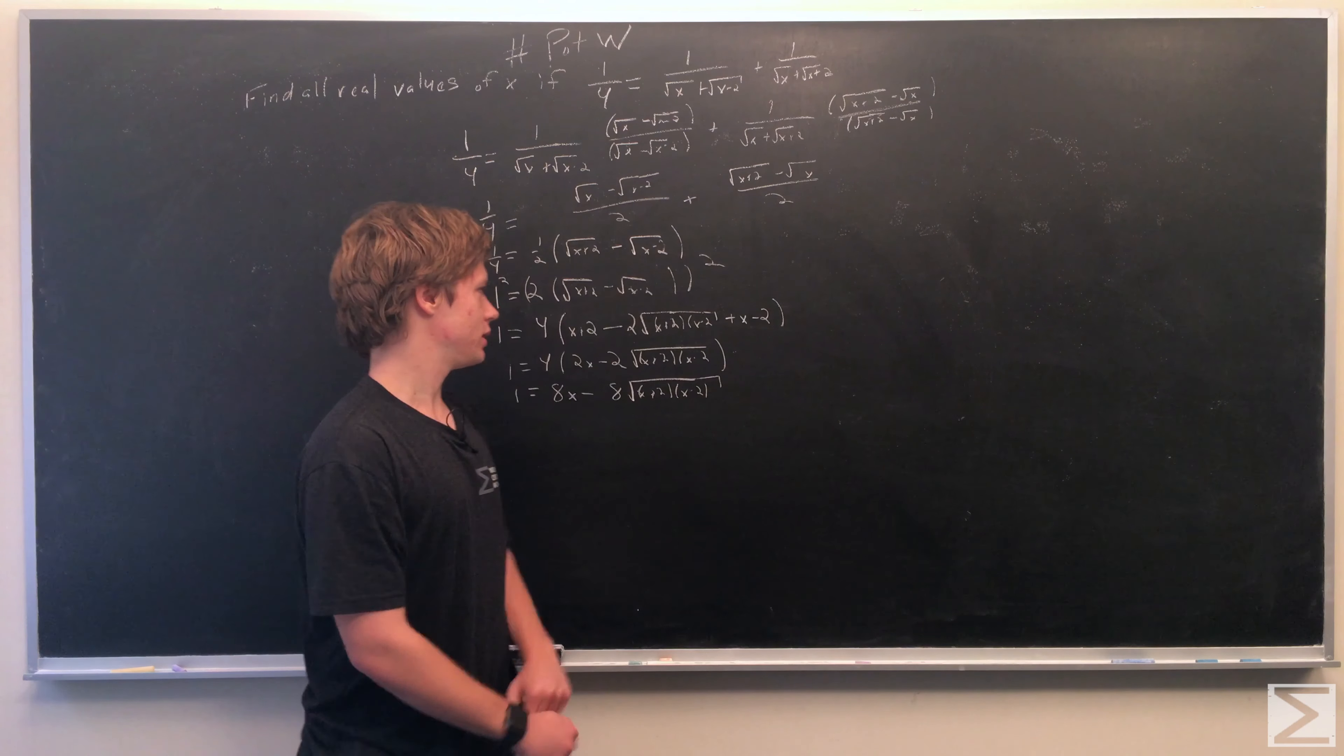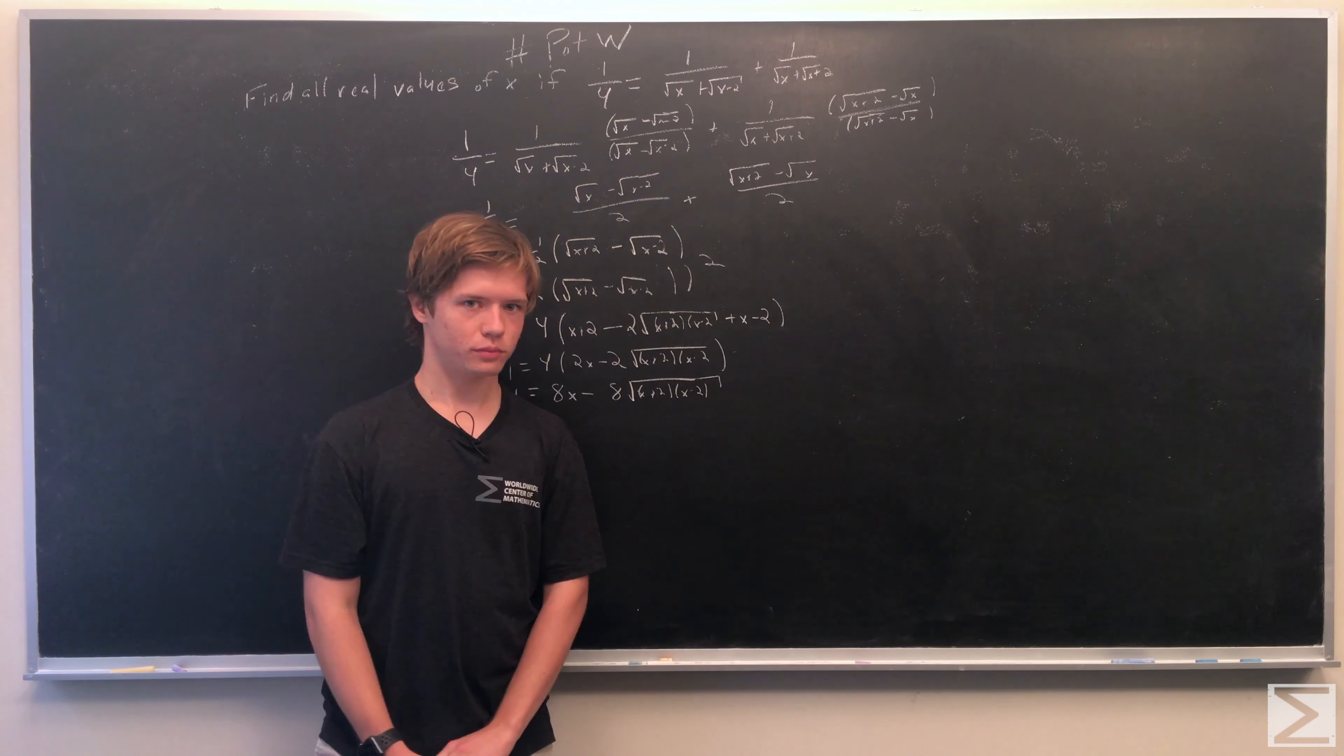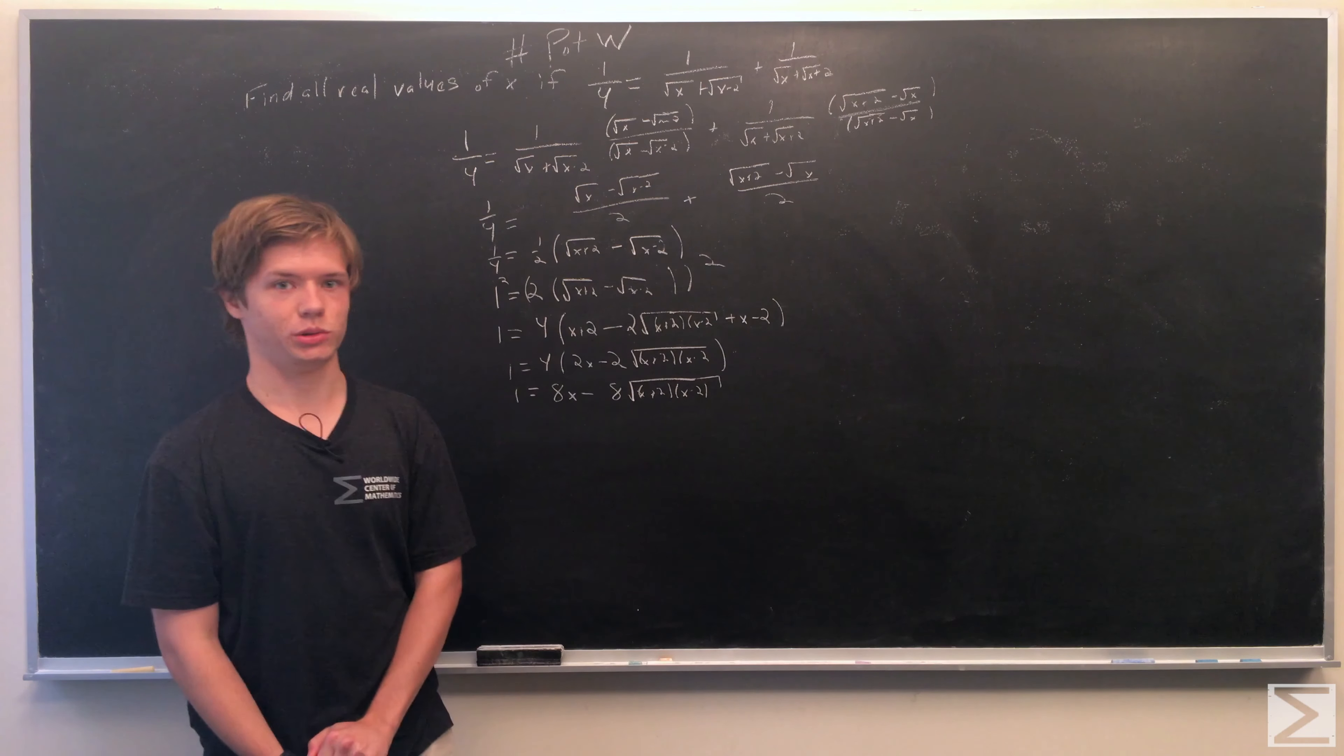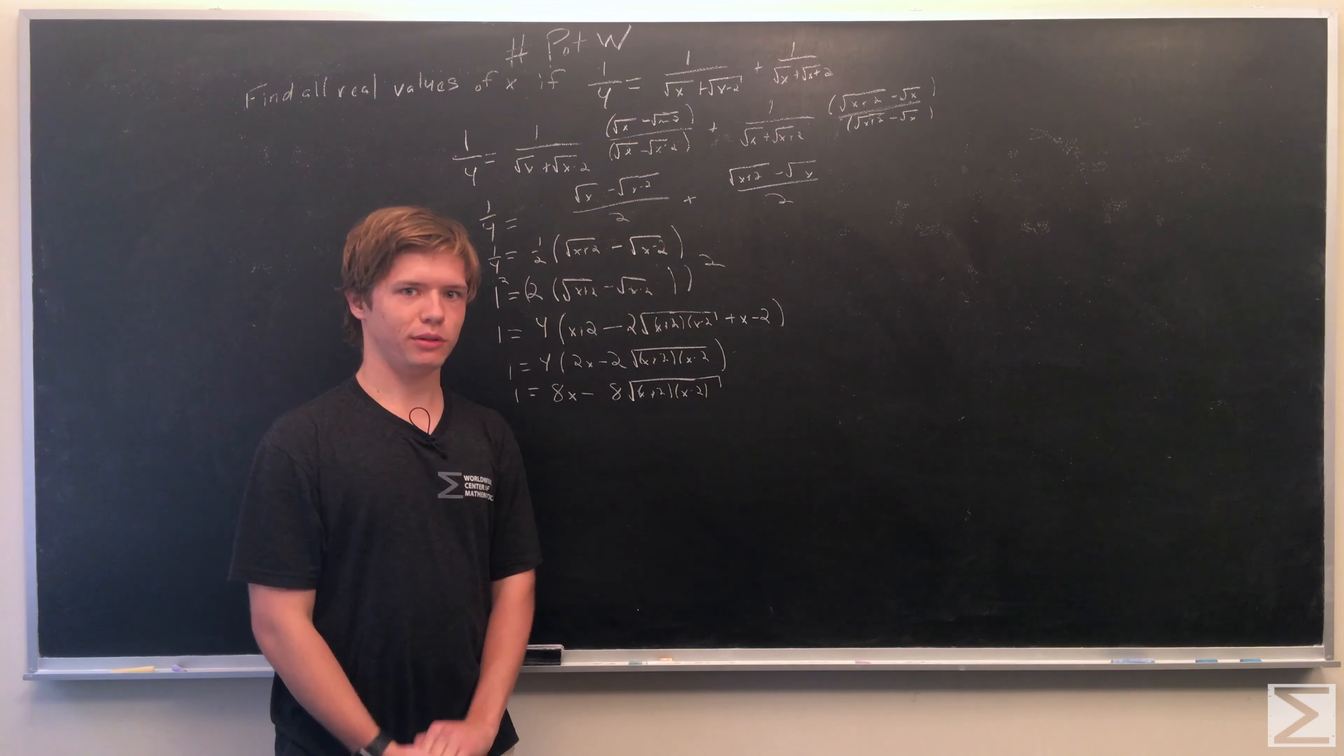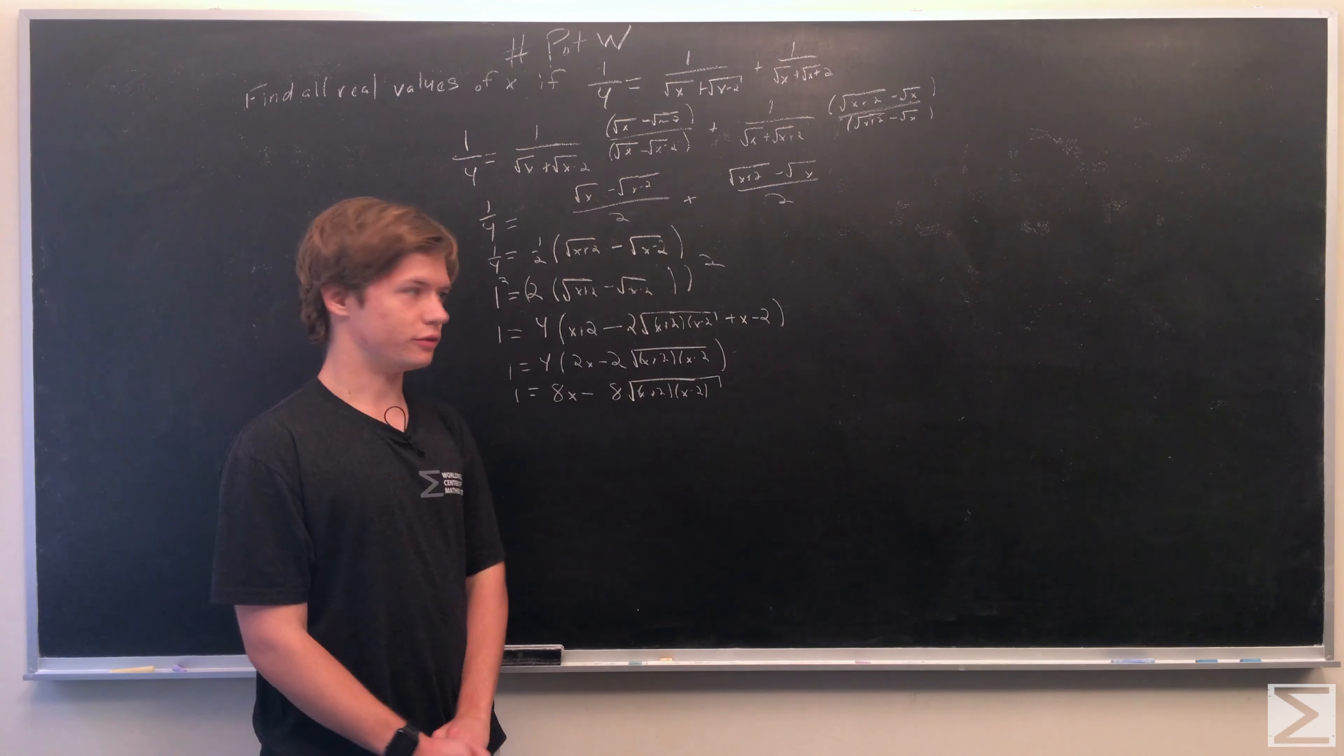The 2's cancel out, leaving 1 equals 4 times (2x - 2√((x+2)(x-2))). Now we want to isolate the radical term, so we'll rearrange by adding this term to one side and subtracting 1 from both sides.